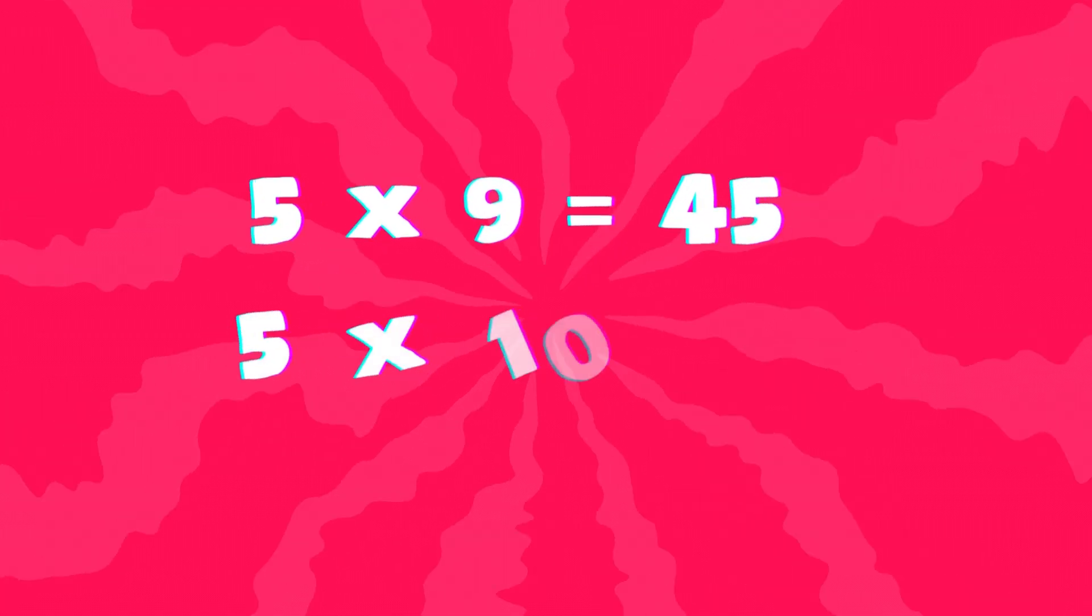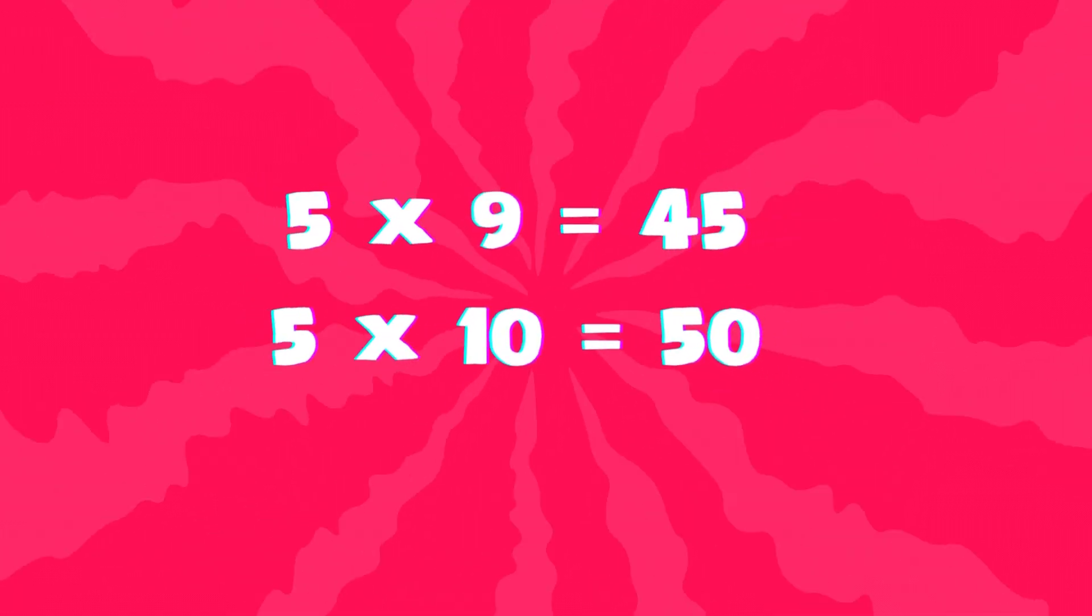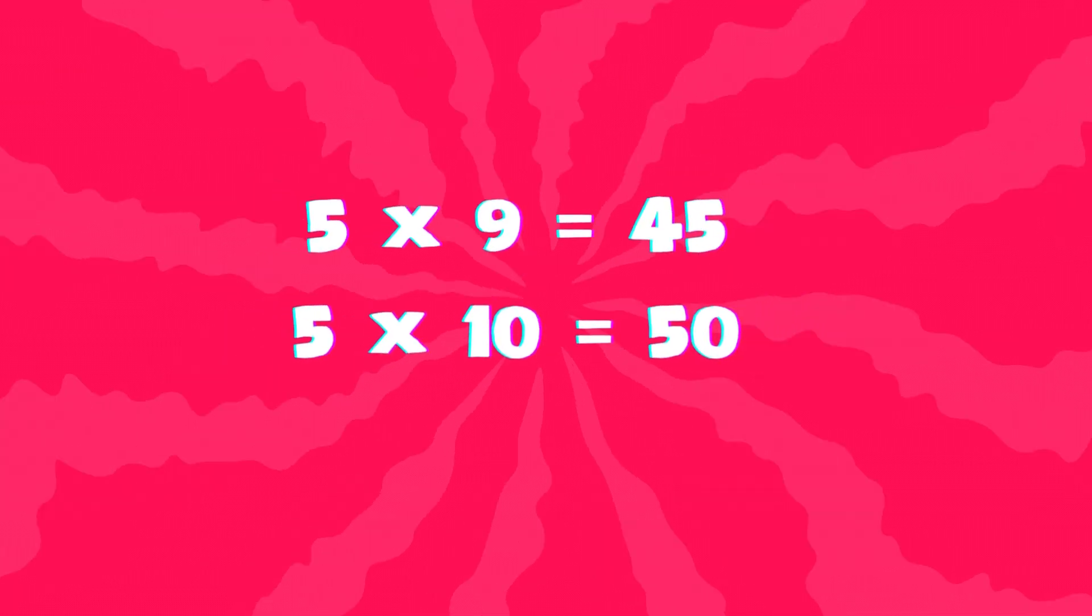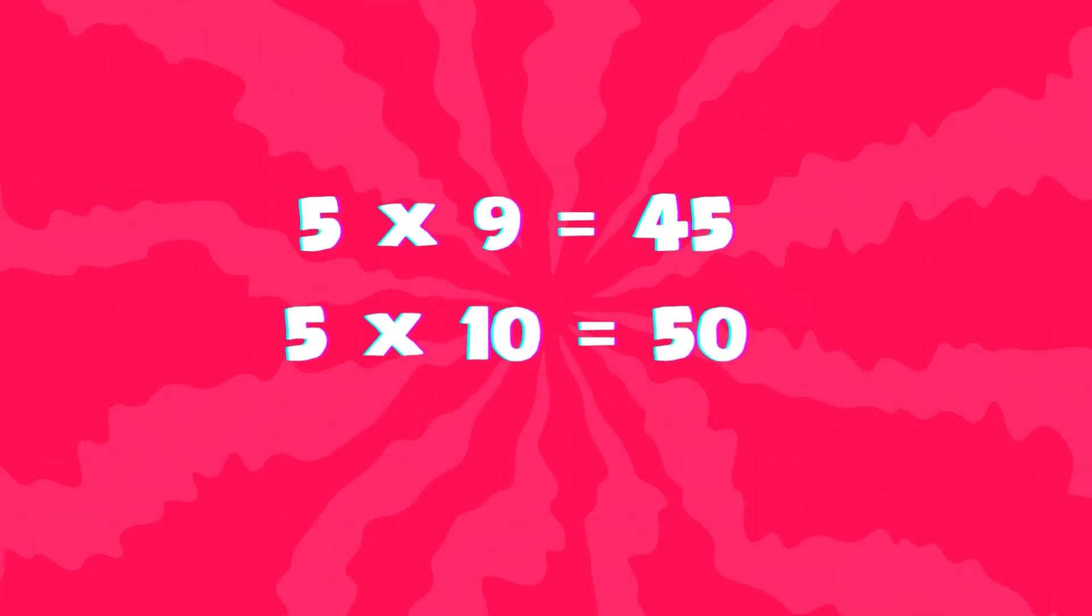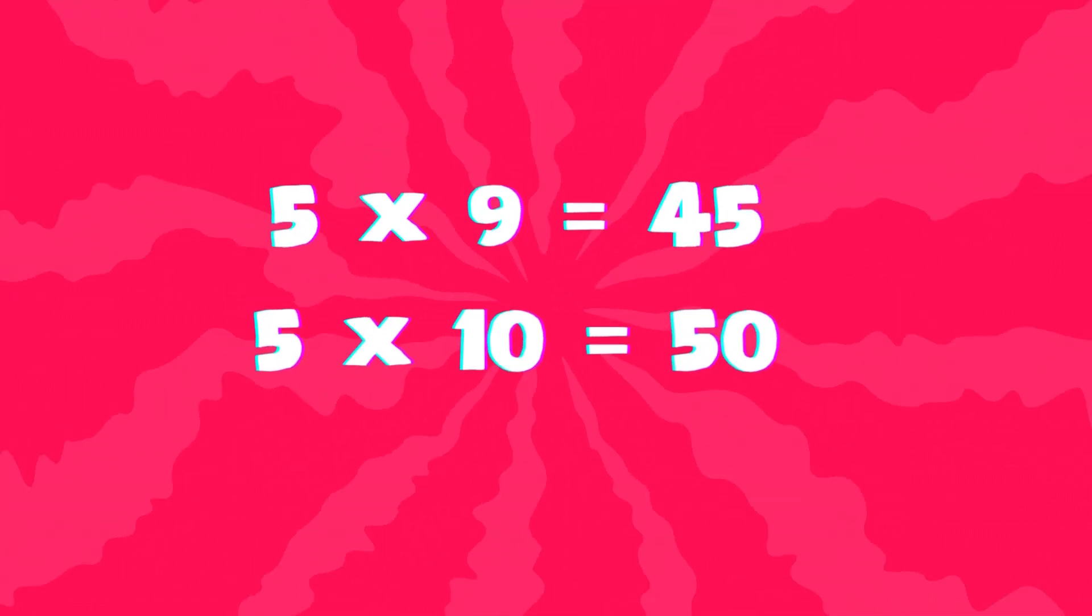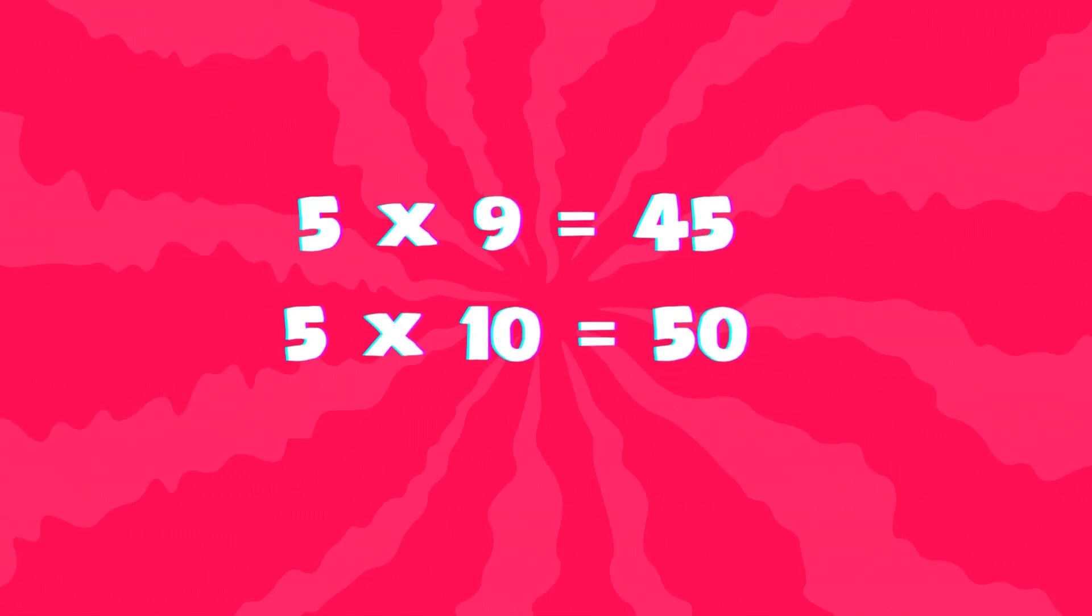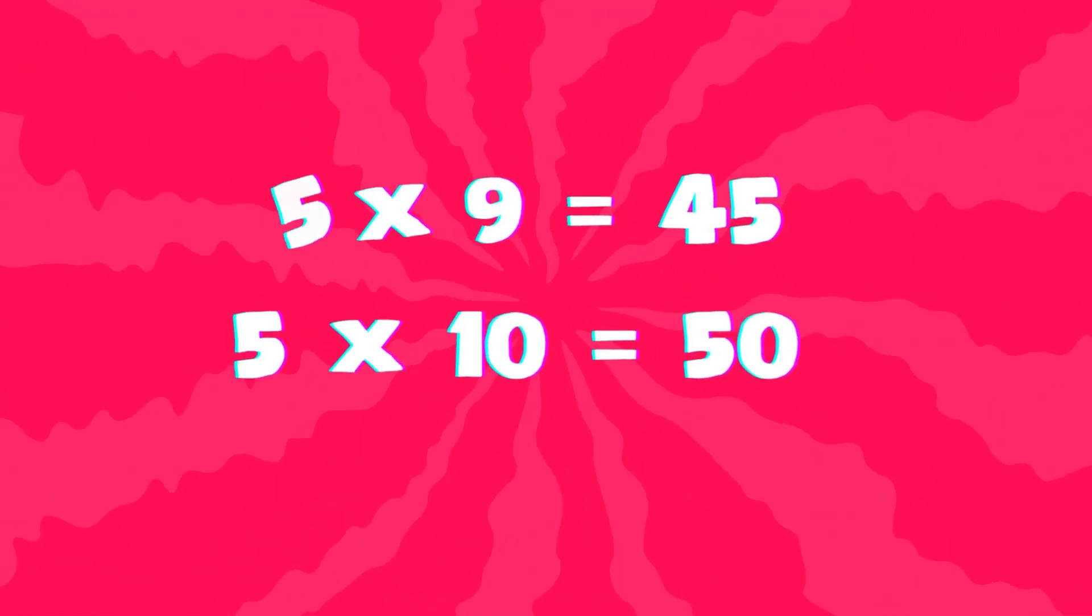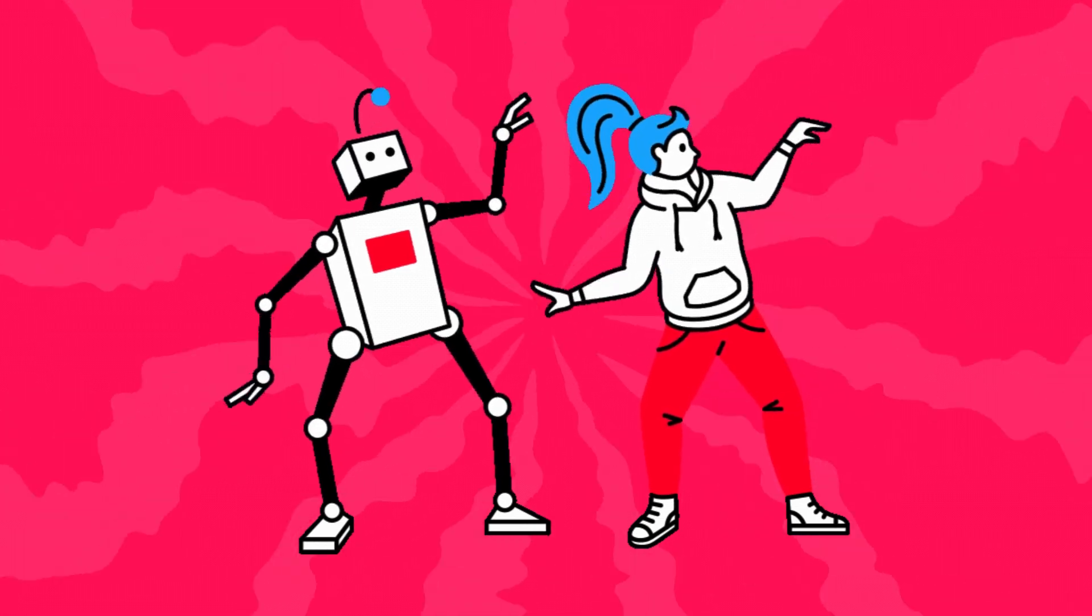5 times 9 is 45, let's all take a bow. 5 times 10 is 50, we're the kings right now. With the 5's in our pockets, we can conquer every line. Just remember these numbers, and you'll do just fine. 5 times 1 is 5,